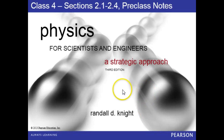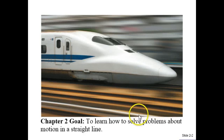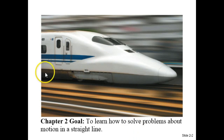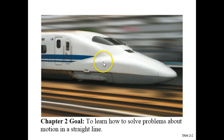Starting in on chapter 2 of Knight now. The goal here is to learn how to solve problems about motion in a straight line, like a speed train going along a track which is quite straight.